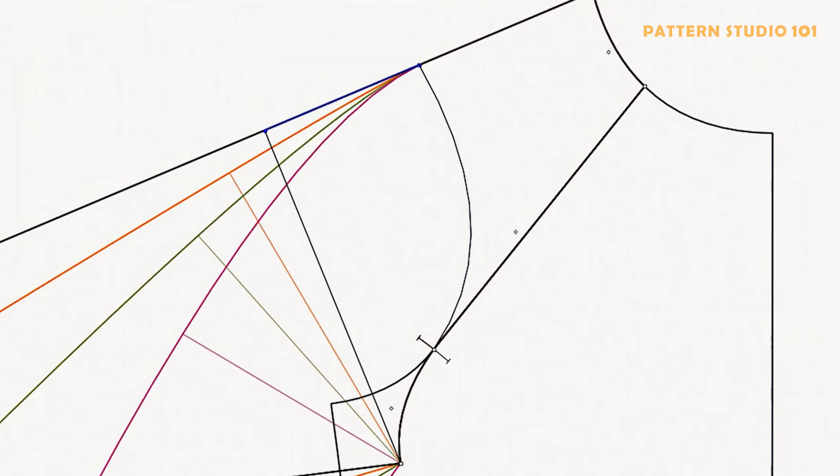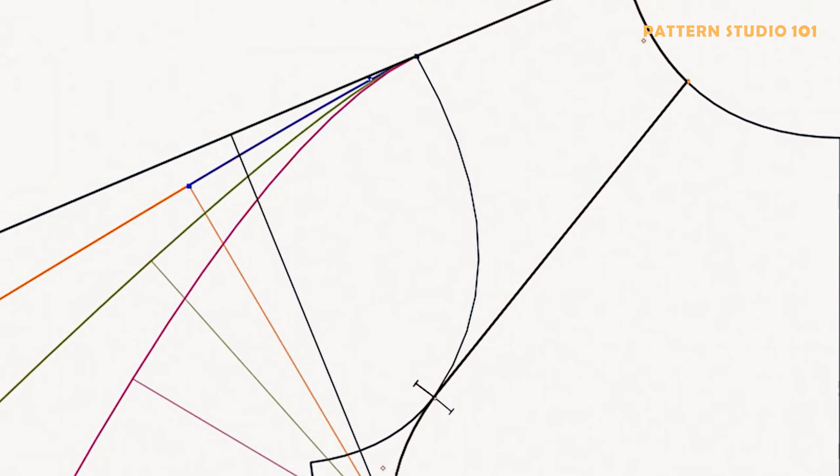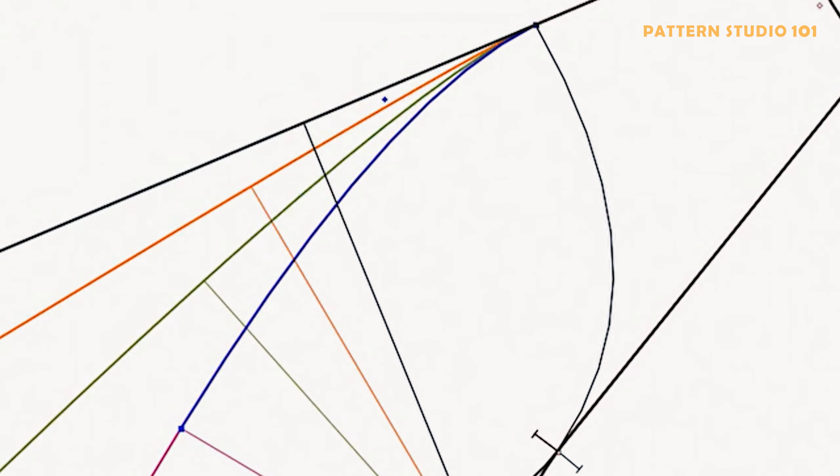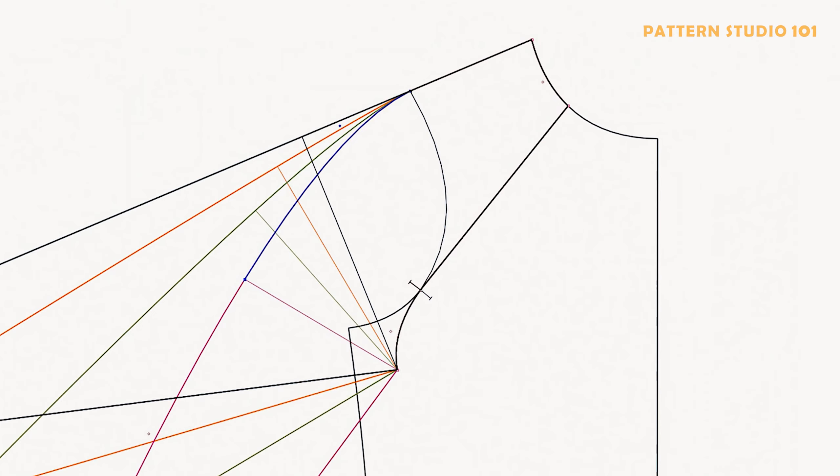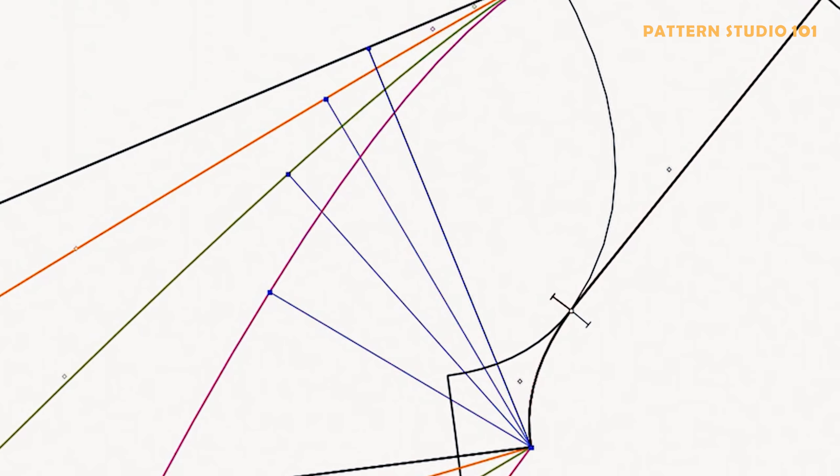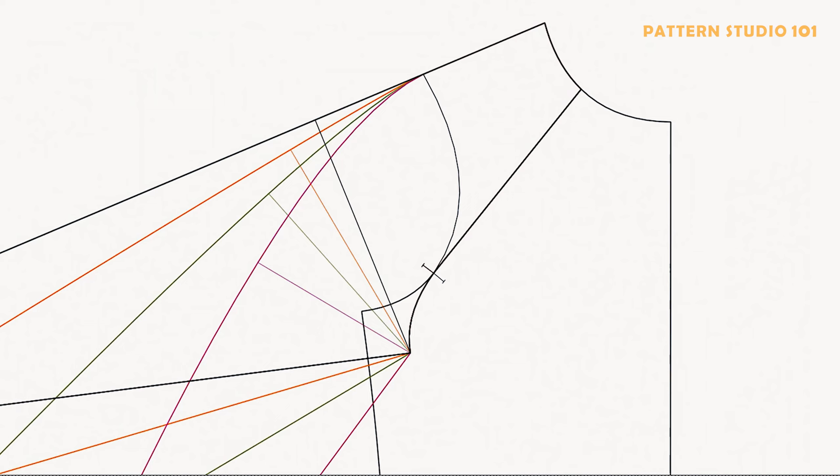See the black one, and orange one, green one, and pink one. The more angled, the longer the sleeve cap height. And you can see all the different biceps. The longer sleeve cap height, the narrower bicep. This is the same as setting sleeves. The relationship between sleeve cap height and bicep is like this.